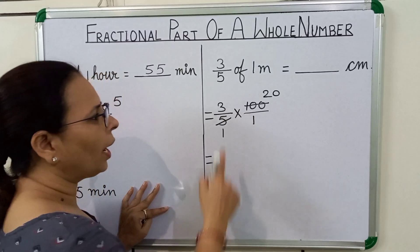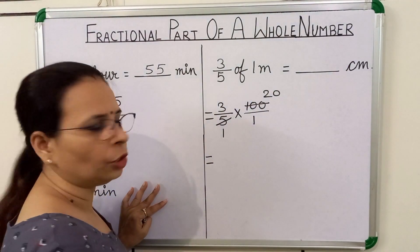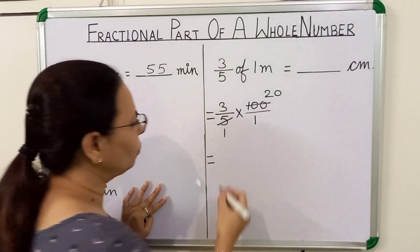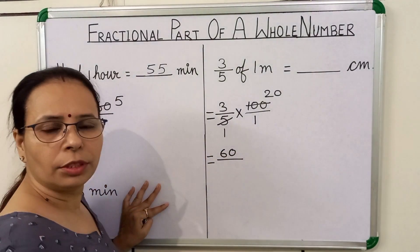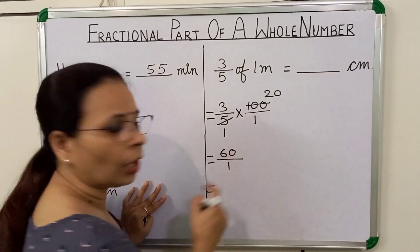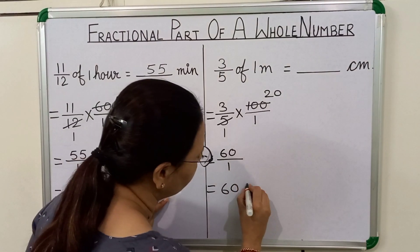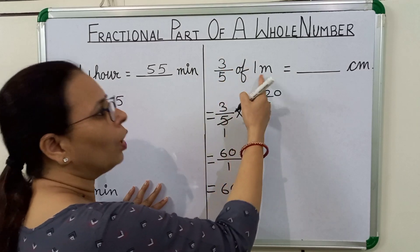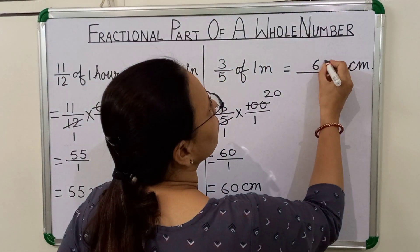We will write 1 in the denominator. 5 cancels into 100, twenty times. We will multiply numerator to numerator and denominator to denominator. 3 times 20 is equal to 60. 1 times 1 is equal to 1. 60 upon 1 is equal to 60. We will write here 'centimeter'. So, 3 fifth of 1 meter is equal to 60 centimeters.